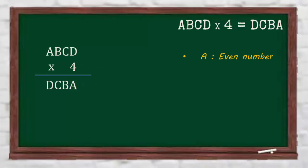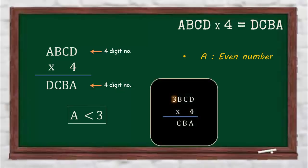Now we are multiplying a 4-digit number by 4, and the product is also a 4-digit number. This gives us another clue that the value of A has to be less than 3. Because if A is 3, then 4 times 3, that's 12, will make the final result a 5-digit number.